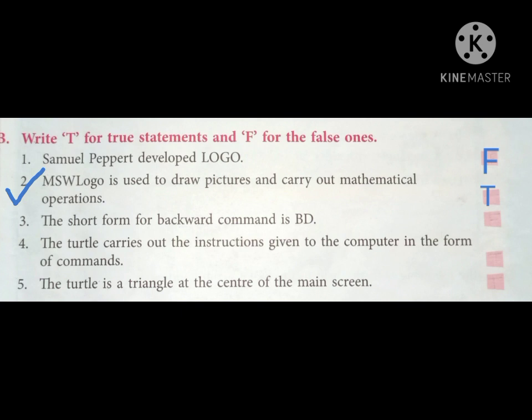Number three: The short form of backward command is BD. Is it true? No, it is not true because we have learned that the short form of backward command is BK, so we will write F on the box. Number four: The turtle carries out the instructions given to the computer in the form of commands. Yes, so we will write T on the box.